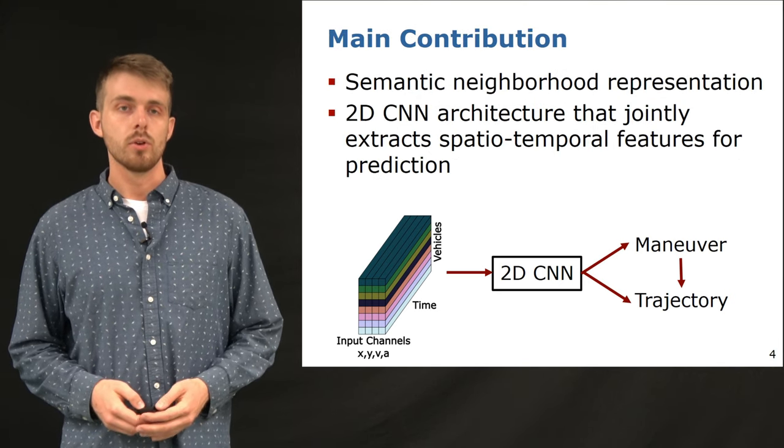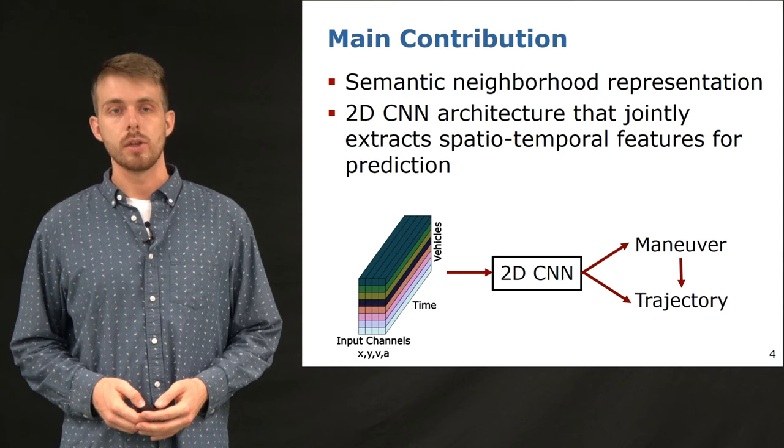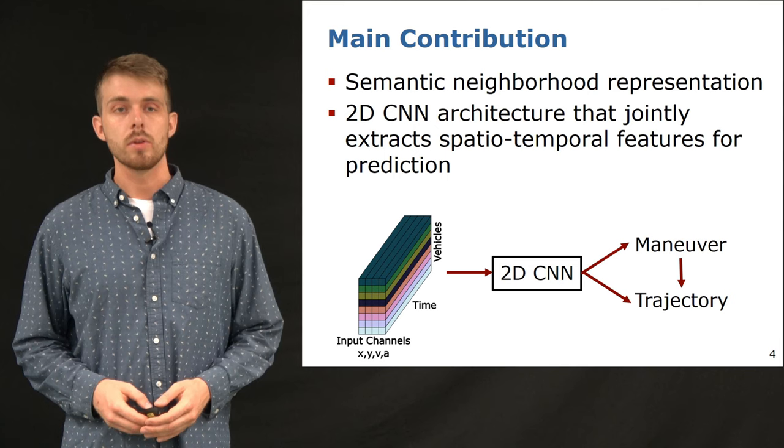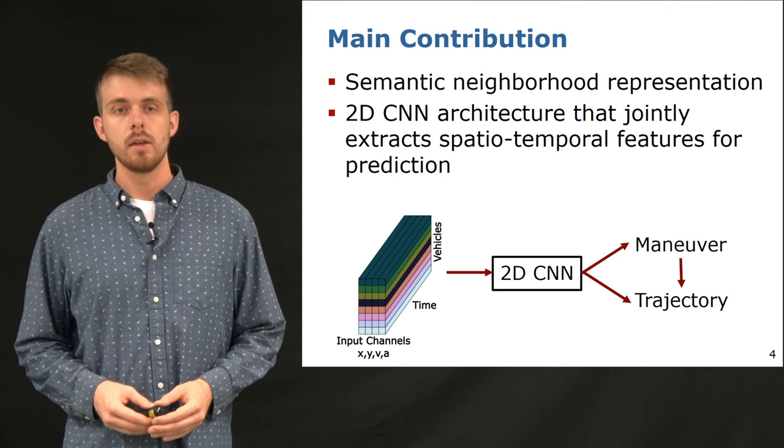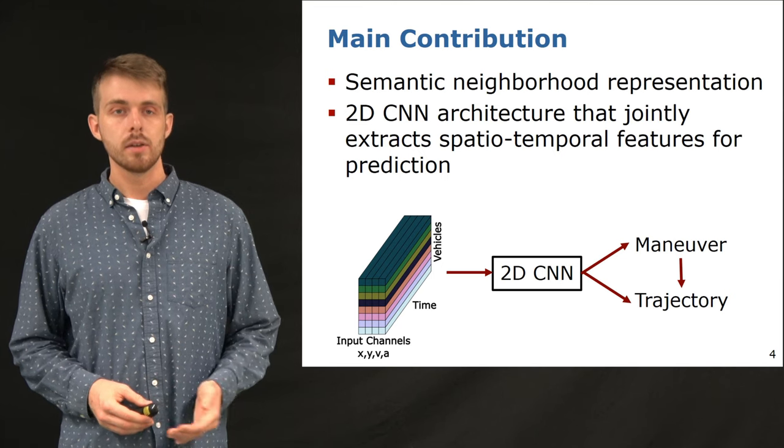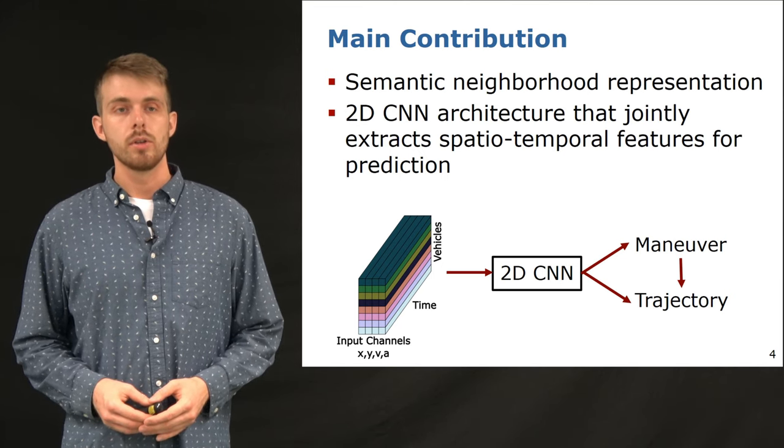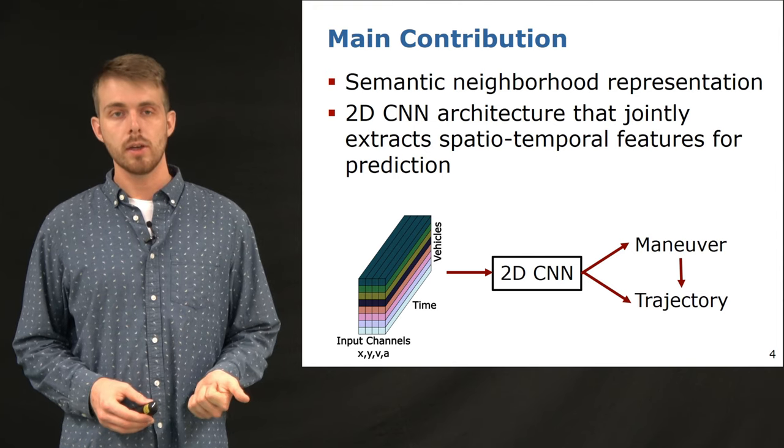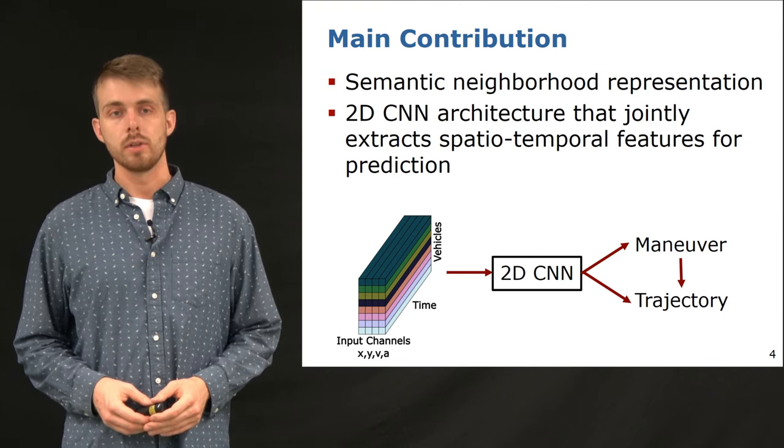The first contribution of our work is a novel input representation based on the semantic neighborhood around the target car. This allows us to encode the past states of all agents in the scene into a spatio-temporal 3D tensor. Second, we develop a convolutional neural network architecture to carry out the two tasks of maneuver classification and trajectory prediction based on the input tensor.